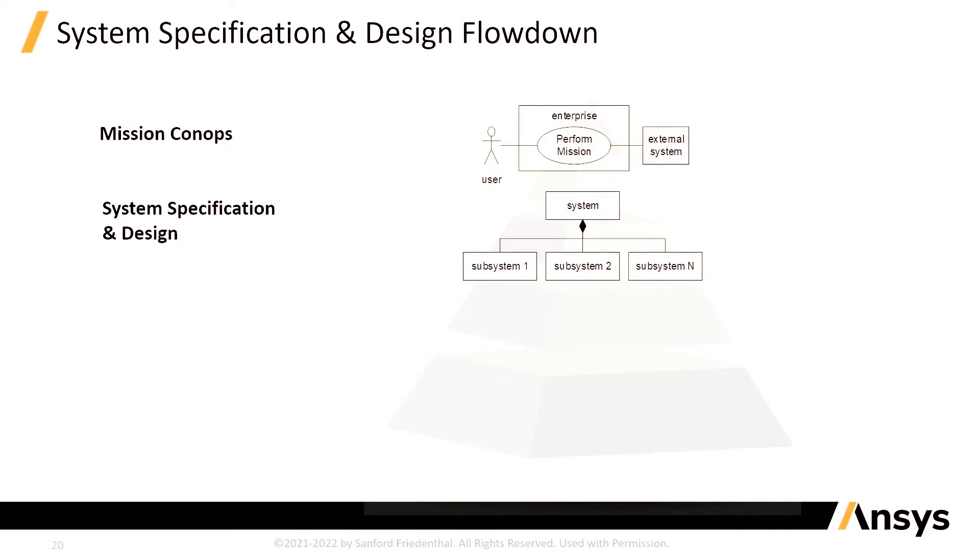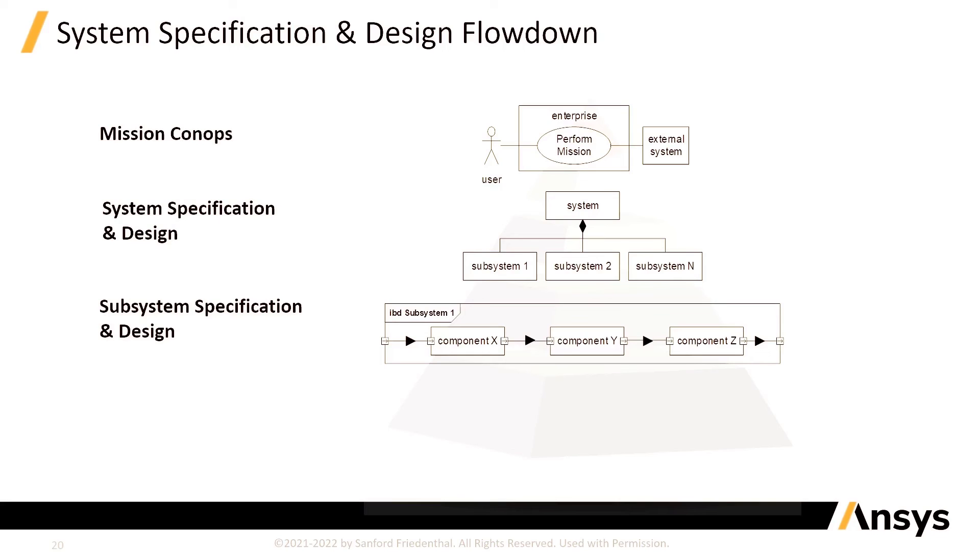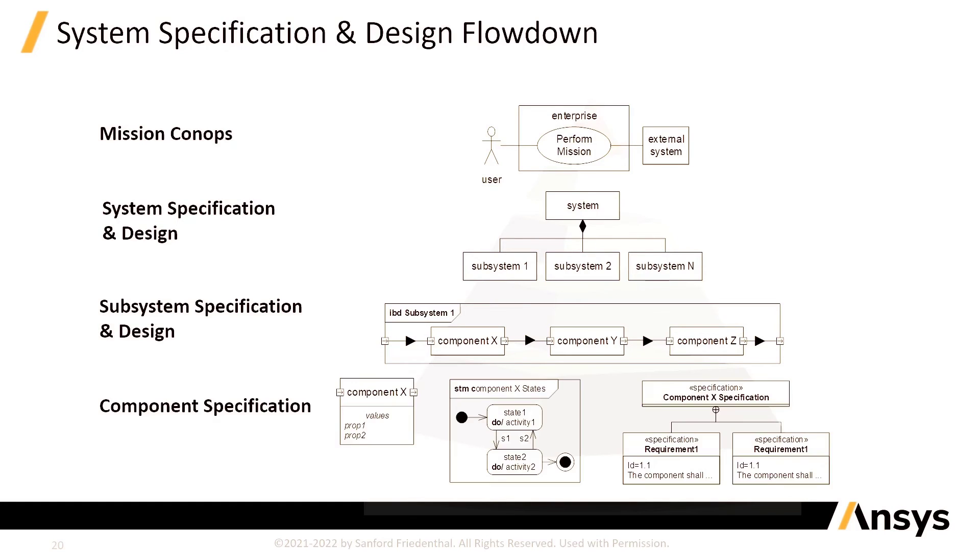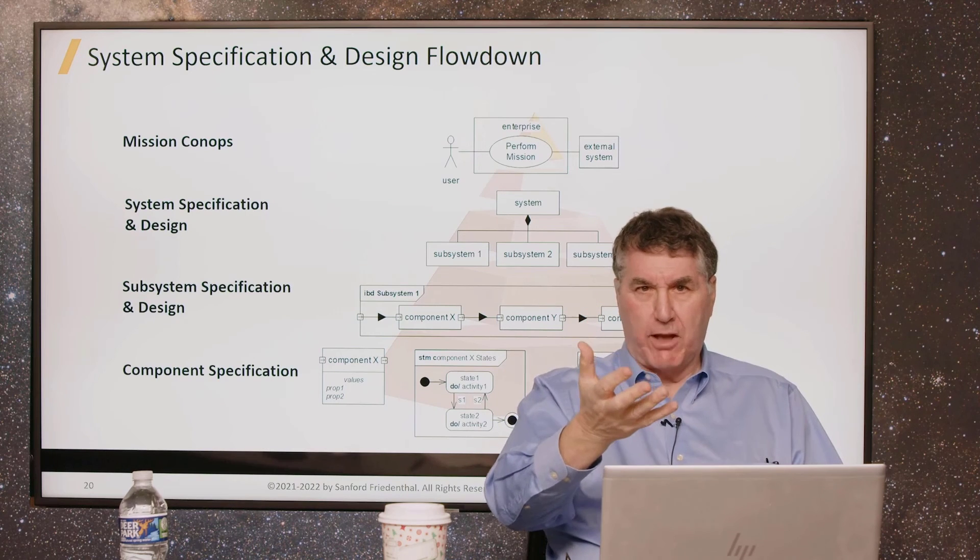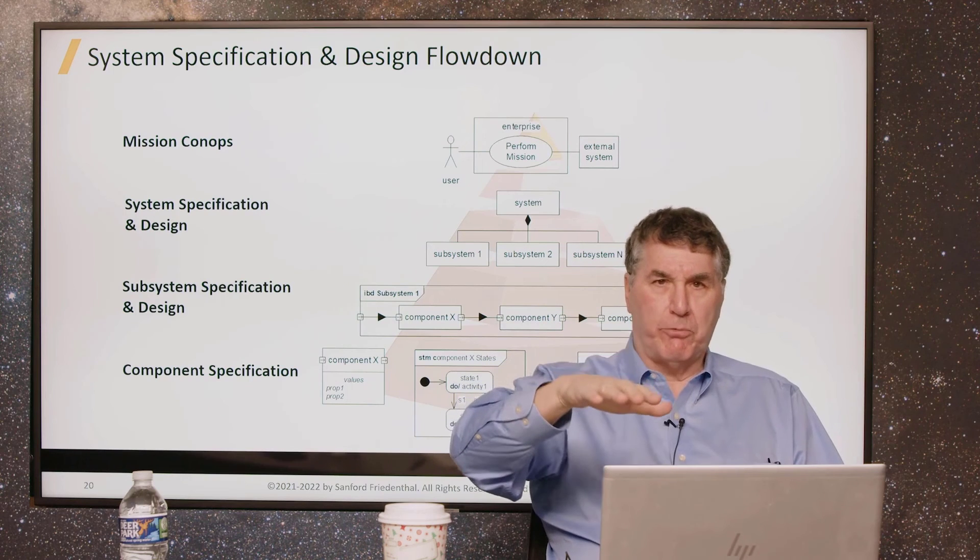And then you see, at this next level, the system composed of various subsystems. And you see, at a lower level, for example, and again, these artifacts are used at each level, but just highlighting them here. You see one of the subsystems is composed of these three components and they're connected in a particular way and they have flows between them. And then, at the component level, you see, for example, that component block on the left with a couple of key attributes called value properties. And you see a state machine for the component and you see the requirements for that component. So, these are the kinds of artifacts that are generated actually throughout the entire process as you flow your system specification and design from mission to system to subsystem to component.